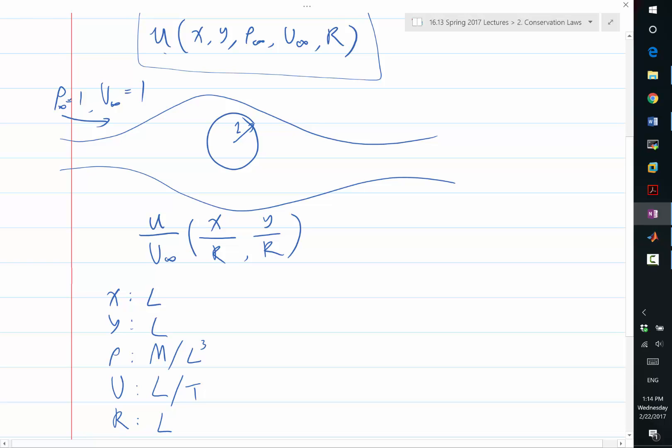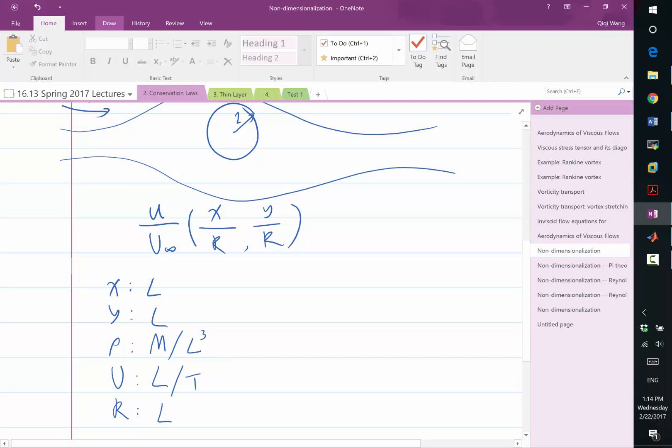Now, if we consider the flow is viscous, the dimensional velocity field now depends on how many numbers? Six, right? We just include the effect of viscosity. That's just easy.